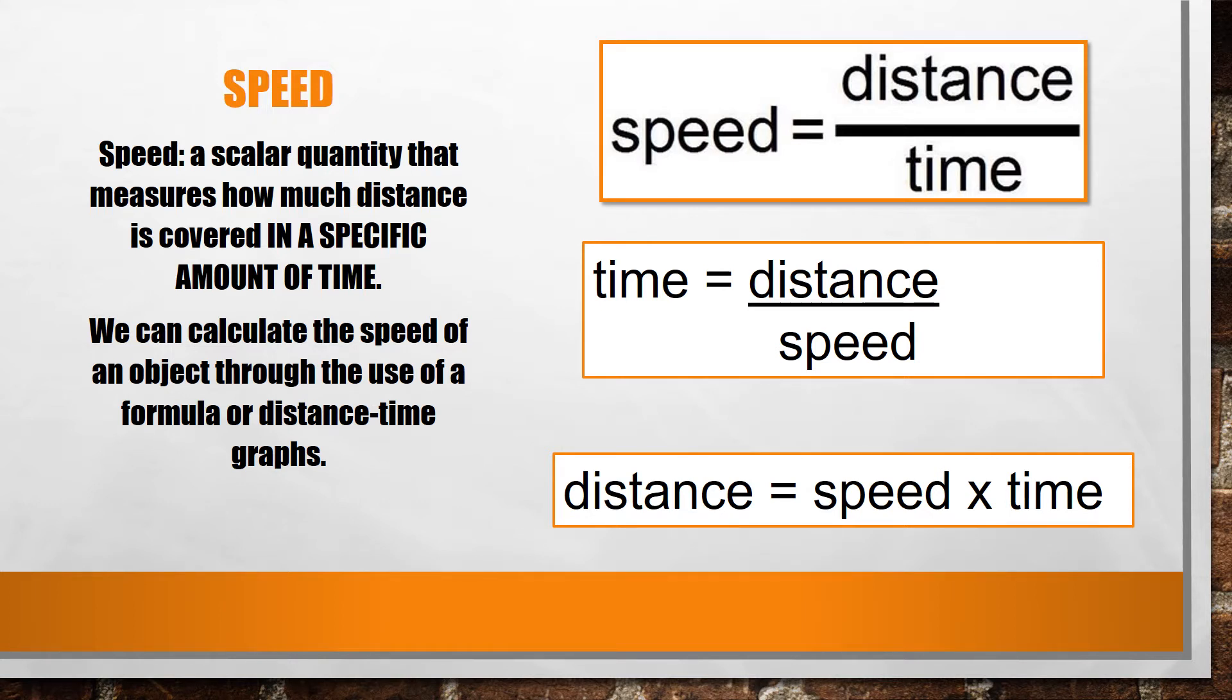You may hear the terms speed and velocity interchangeably from time to time. The difference is that speed is a scalar quantity that measures how much distance is covered in a specific amount of time. This means that it doesn't matter which direction an object is going, only how fast it is moving. Velocity is a vector quantity that also measures how much distance is covered in a specific amount of time. However, it takes into account the direction that the object is moving. We can calculate the speed or velocity of an object through the use of a formula or distance-time graphs. The formula for speed is distance divided by time. We can rearrange this formula to help us solve for time or distance as well. Time would be equal to our distance divided by speed, where distance is equal to our speed times our time.